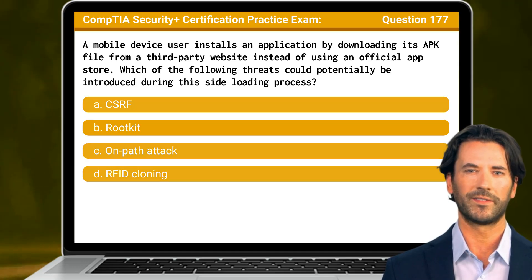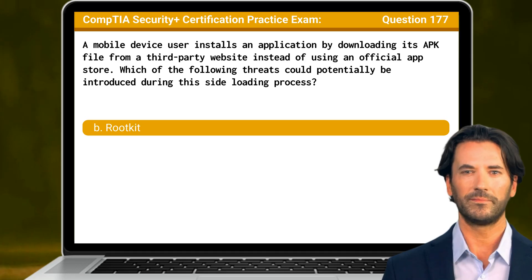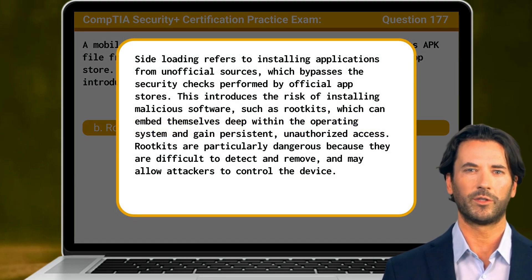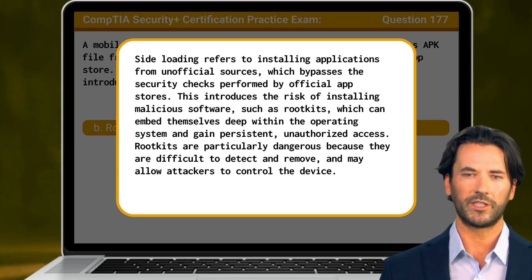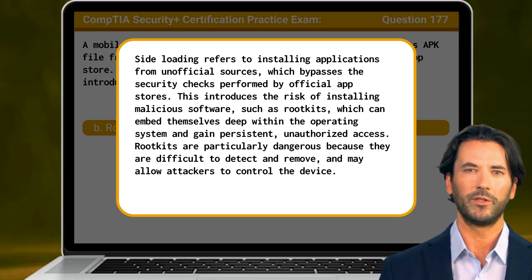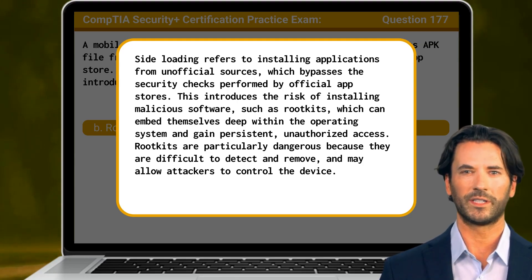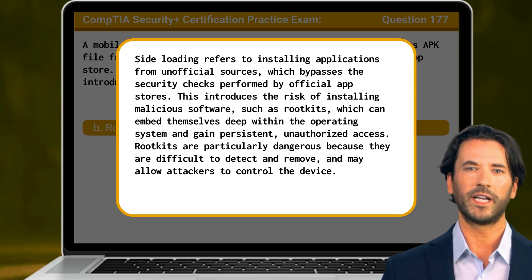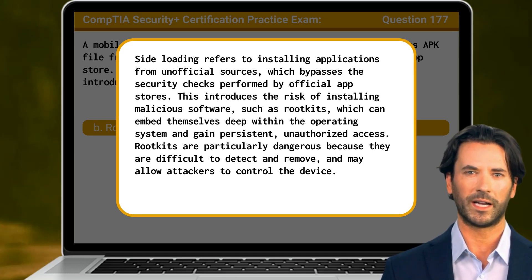The answer is B. Rootkit. Sideloading refers to installing applications from unofficial sources, which bypasses the security checks performed by official app stores. This introduces the risk of installing malicious software, such as rootkits, which can embed themselves deep within the operating system and gain persistent, unauthorized access. Rootkits are particularly dangerous because they are difficult to detect and remove and may allow attackers to control the device.